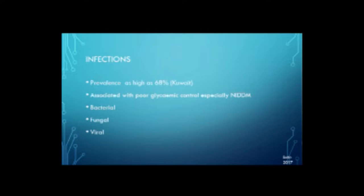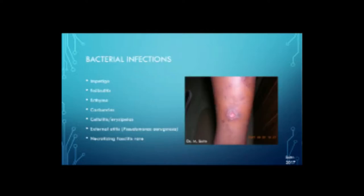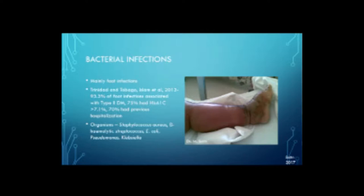Moving on to infections: the prevalence of infections in diabetics is as high as 68%, associated with poor glycemic control, especially in non-insulin-dependent diabetics. Bacterial infections include impetigo — which normally occurs in children, so if you see impetigo in an adult you should check for diabetes — folliculitis, ecthyma, carbuncles, cellulitis, erysipelas, external otitis, which in many cases is due to Pseudomonas aeruginosa, and necrotizing fasciitis, which thankfully is rare but occurs more commonly in diabetic patients.